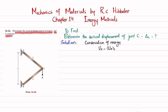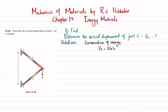This is a truss where joint C has a load P applied. The length of AC is L and BC is also L. The product AE is constant. Due to this load, joint C will move downward, covering a displacement delta C, and we have to find delta C.